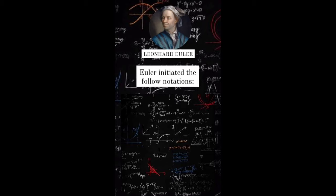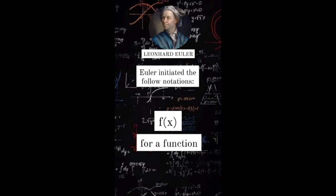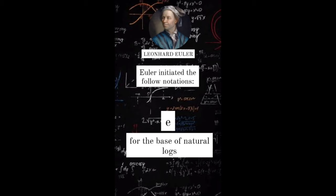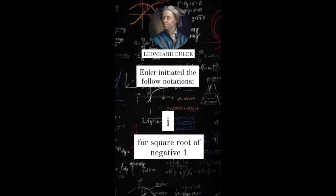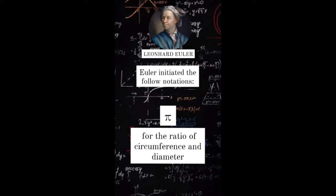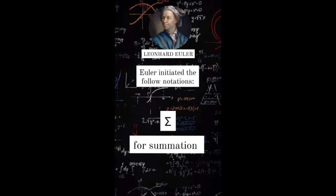Euler initiated the following notations: f(x) for a function, e for the base of natural logs, i for the square root of negative 1, Pi for the ratio of circumference and diameter, and Sigma for summation.